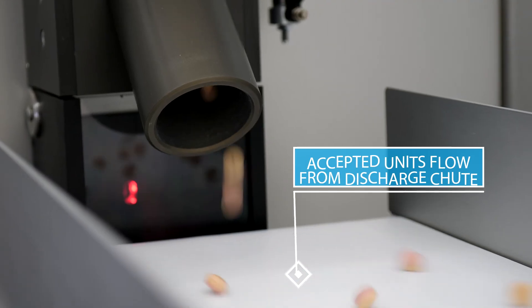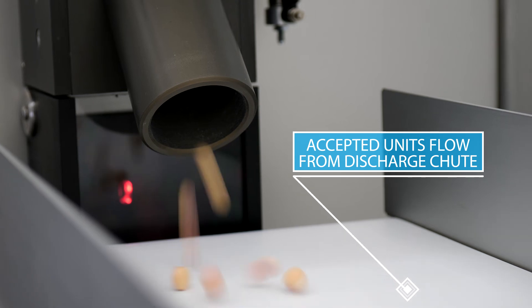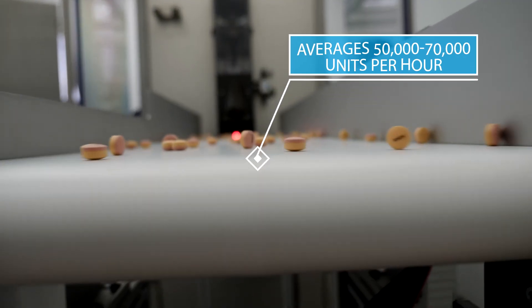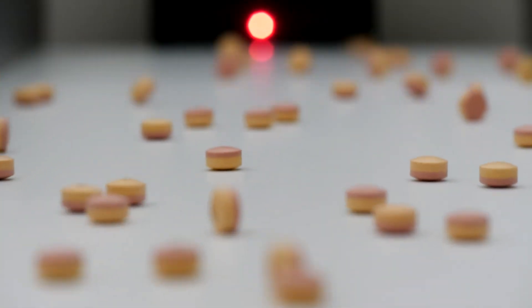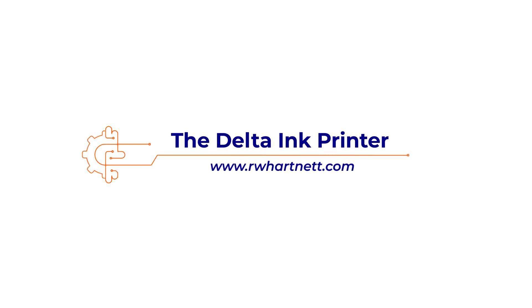Finally, accepted tablets are sent through the delivery chute where they are assembled for packaging with an average output of 50,000 to 70,000 units per hour. To learn more about the Delta ink printer, visit rwheartnet.com.